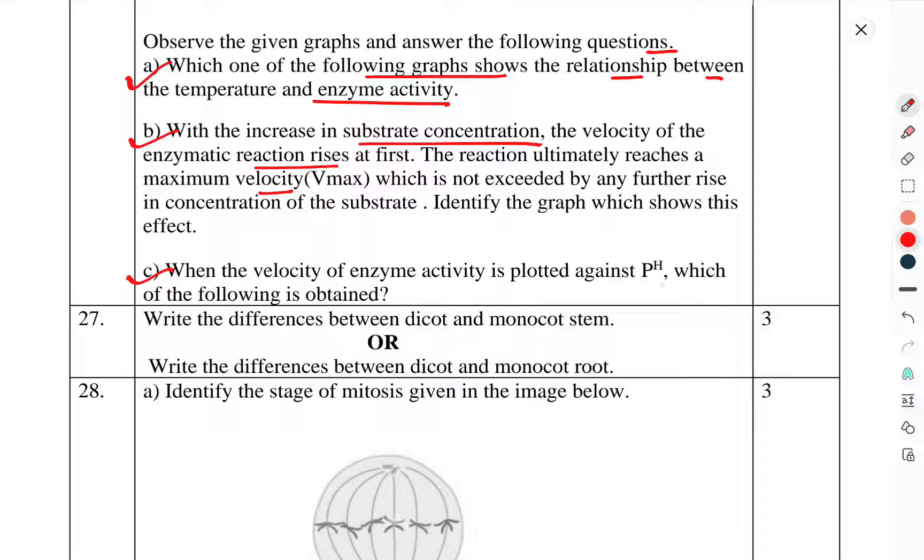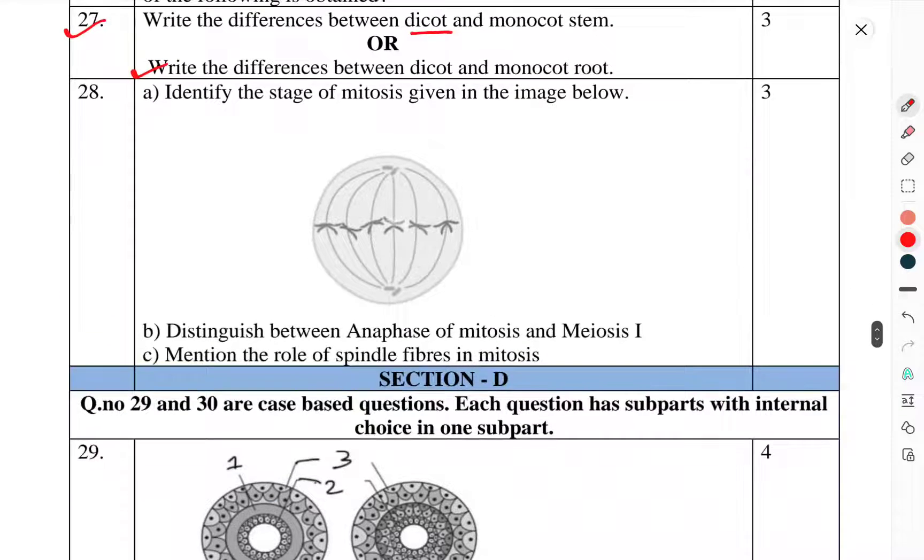C) When the velocity of enzyme activity is plotted against pH, which of the following is obtained? Question 27: Write the differences between dicot and monocot stem, or write the differences between dicot and monocot root. Question 28: Identify the stage of mitosis given in the figure below. Distinguish between anaphase in mitosis and meiosis 1. Mention the role of spindle fibers in mitosis.